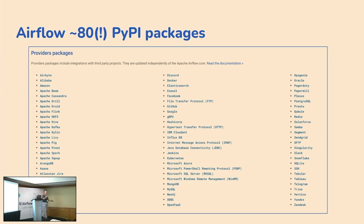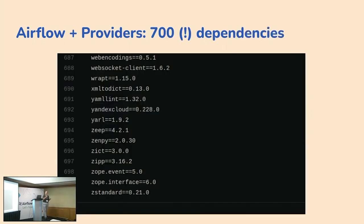Airflow consists of the Airflow core and 80 providers. Together with those providers, we recently hit 700 dependencies — last time I gave this talk two months ago it was 650, so we grew by 50 dependencies in the course of two months.